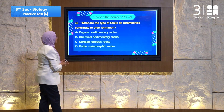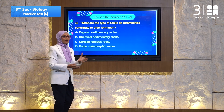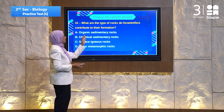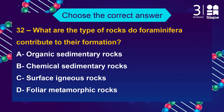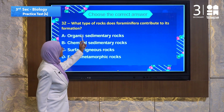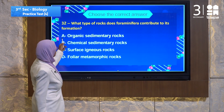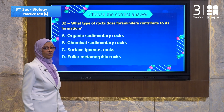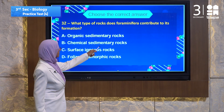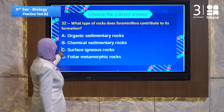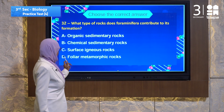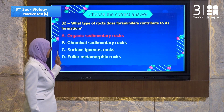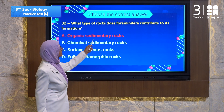Question 32 speaks about living organisms — specifically foraminifera. What type of rocks do foraminifera contribute to forming? Choice A: organic sedimentary rocks. Choice B: chemical sedimentary rocks. Choice C: surface igneous rocks. Choice D: foliated metamorphic rocks. The answer is A — organic sedimentary rocks.